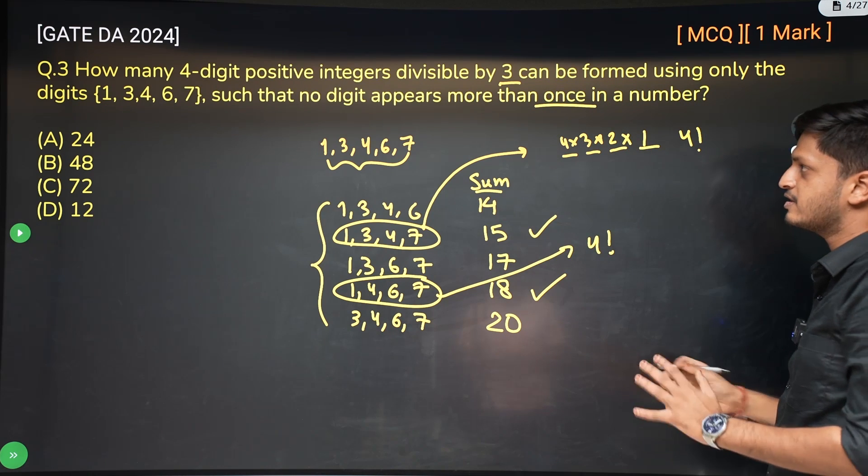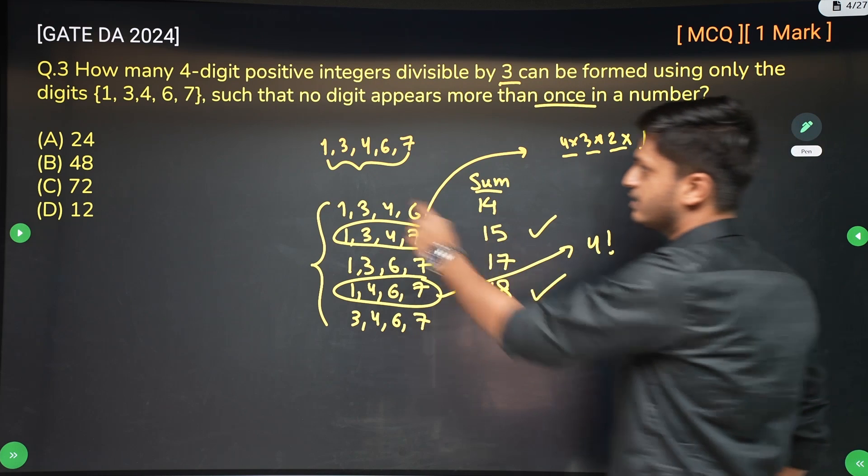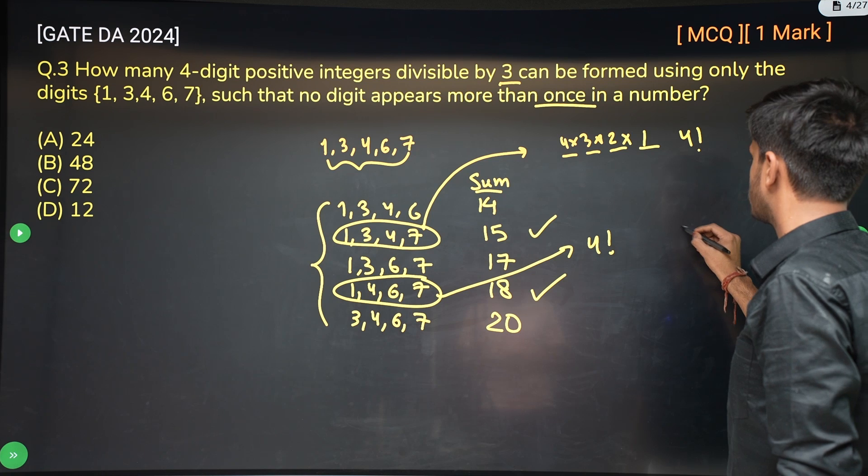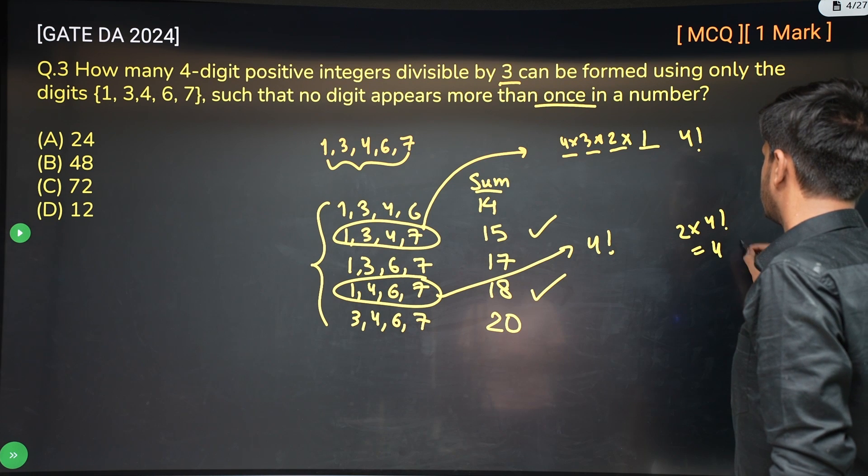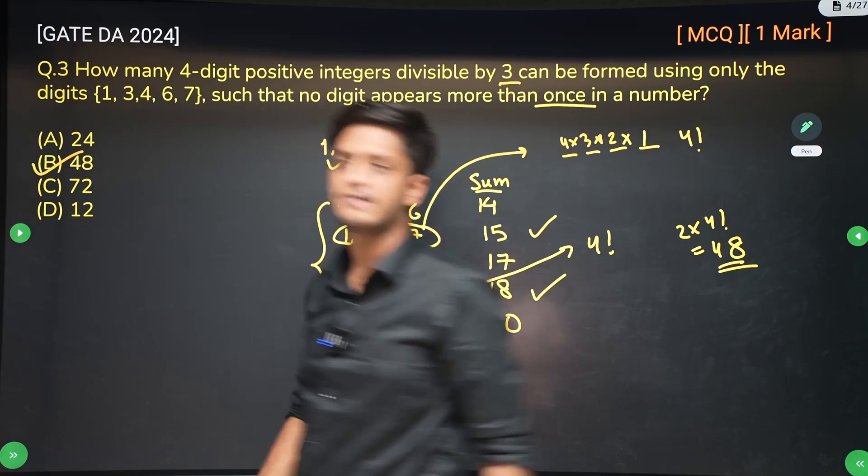So total number of integers, 4-digit positive integers which are divisible by 3, which can be formed using 1, 3, 4, 6, 7 are 4 factorial plus 4 factorial, which is 48. So option B is correct.